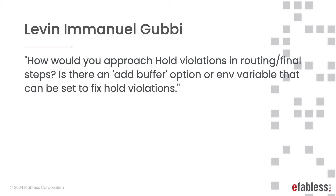How would you approach hold violations in routing final steps? Is there an add-buffer option or variable that can be set to fix hold violations? We have a great timing closure document by our EDA/IC design lead Dr. Shallan in the OpenLane 2 documentation under 'Achieving Timing Closure.' With respect to buffer ECOs, we do not have that feature at the moment, and we welcome enhancement requests on our GitHub issues.